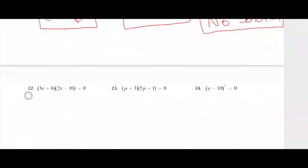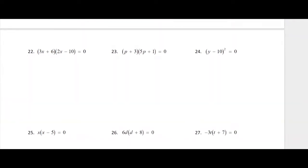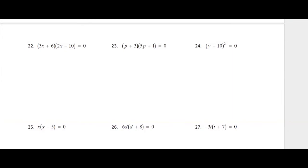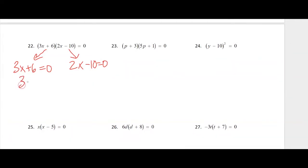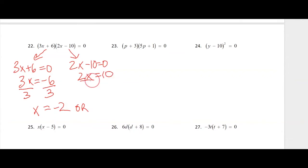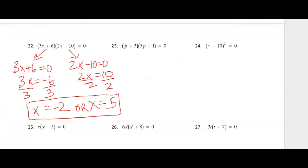Let's take a look at the next one — we're solving some quadratics. These are already factored, so we go directly to the zero product property. We set each factor equal to zero. On the left, subtract 6 from both sides: 3x equals negative 6, divide by 3, x equals negative 2. On the right, add 10 to both sides: 2x equals 10, divide by 2, x equals 5.